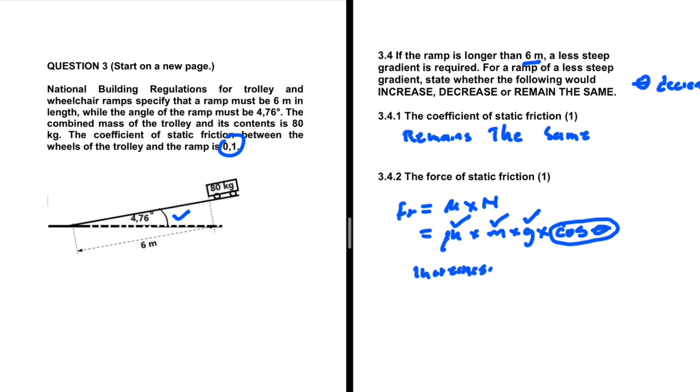So we can say here that the force of static friction increases. And why do we say that it will increase? Because the normal force increases. Normal force increases, because this is the normal force. And as the angle decreases, the normal force will increase, as cos of theta increases with a decrease in theta. So there we go. We have answered the question.